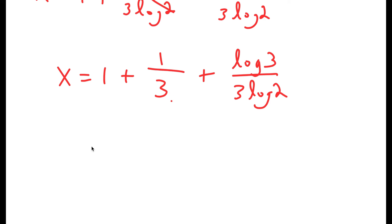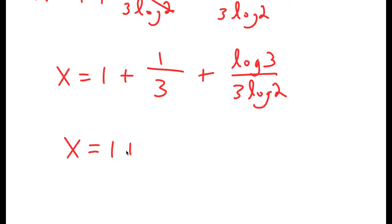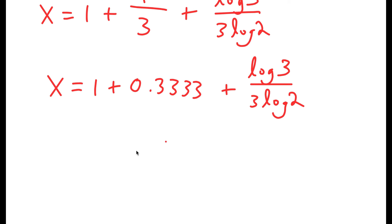And 1 over 3 is equal to 0.333 continuing on and on, but we can just write this as 0.333. So I have this plus log 3 over 3 times log 2. So now from here, 1 plus 0.33333 is 1.3333. So I have this plus log 3 over 3 times log 2.